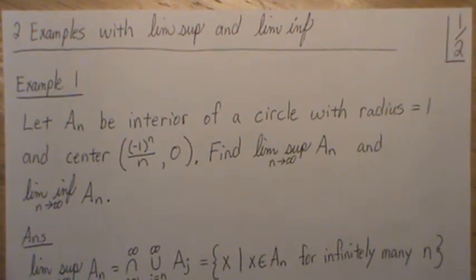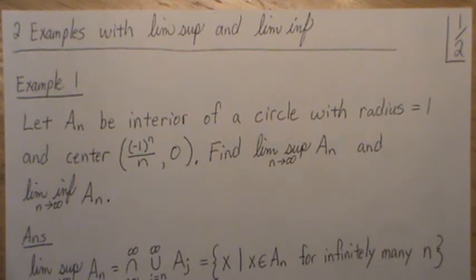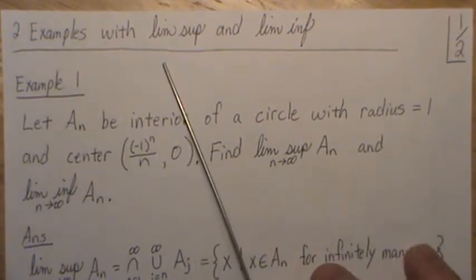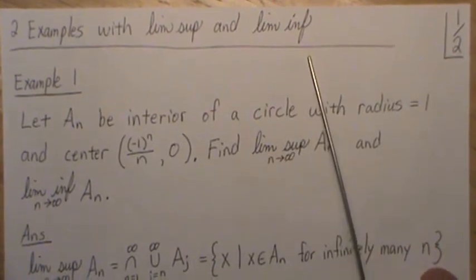Hello, this is the next video in a playlist I'm calling Probability Measure. I currently have around 10 videos dealing with a lot of the theory, theorems, etc., and I always get feedback about not having enough examples. So I'm going to go back and add 20 to 30 example videos sprinkled within this measure-theoretic playlist. This is the first one, and we're going to do two examples with the limit supremum and the limit infimum.